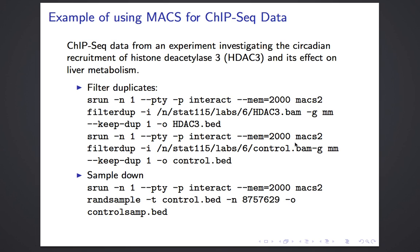Before calling the peaks you have to do two steps: filtering the duplicates and sampling down. The reason for filtering duplicates is that when you conduct genome analysis with PCR, there might be some reads that are disproportionately amplified. In order to get rid of those and reduce PCR bias, we filter the duplicates using the filterdup functionality.